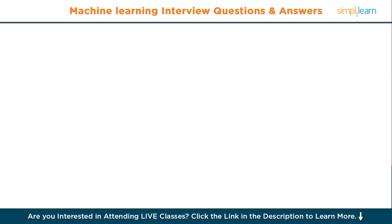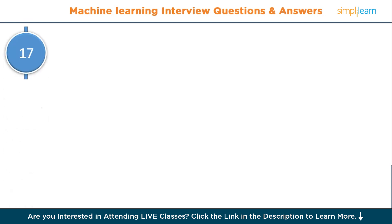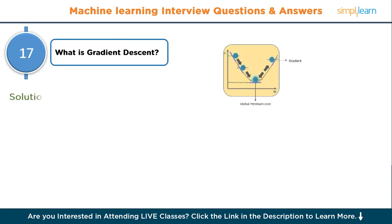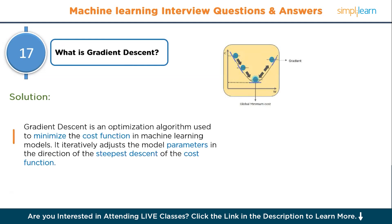Moving to question number seventeen: what is gradient descent? Gradient descent is an optimization algorithm used to minimize the cost function in machine learning models. It iteratively adjusts the model parameters in the direction of the steepest descent of the cost function.